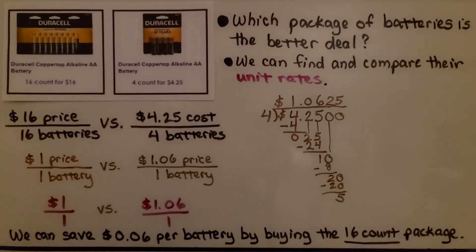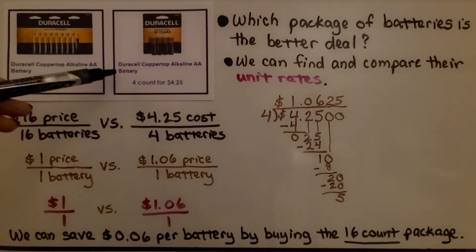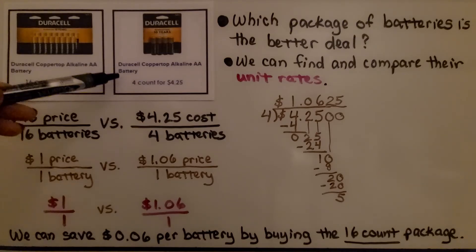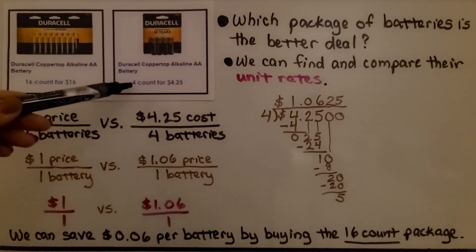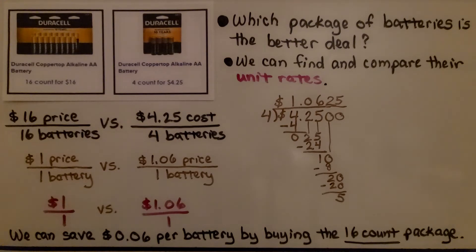Take a look at this picture of batteries. These are Duracell Coppertop AA batteries. It says you can get a 16 count for $16. This one says you can get the same batteries, a four count for $4.25. So which package of batteries is the better deal? We can find and compare their unit rates. We can find out how much it costs for one battery.